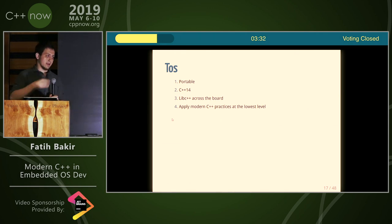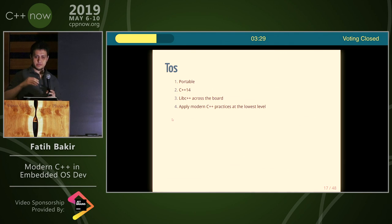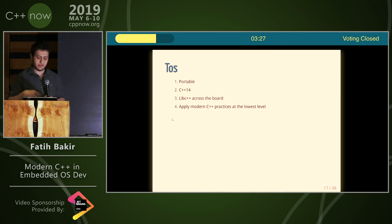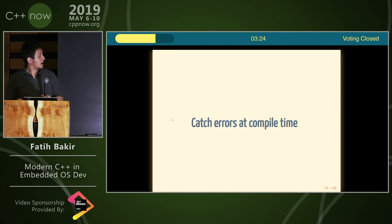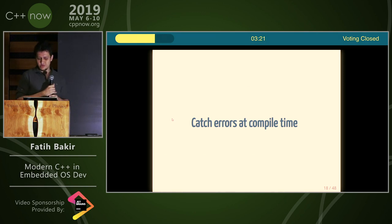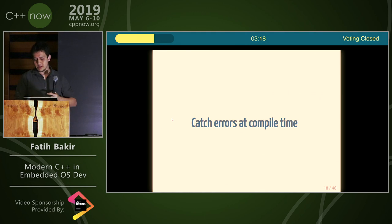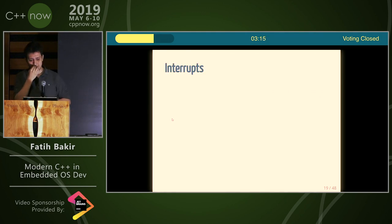I tried to basically apply modern C++ practices at the lowest level. Like, I don't like it when you write stuff to the registers — they're living in a span, for instance. There's never pointer-size pairs. This happened like a month ago. It's basically something I did to catch errors at compile time. In these domains, there are things called interrupts.